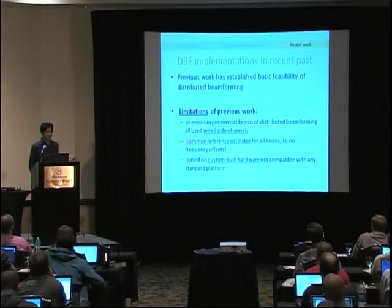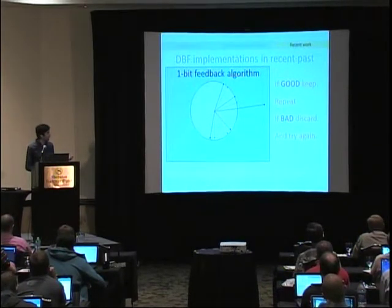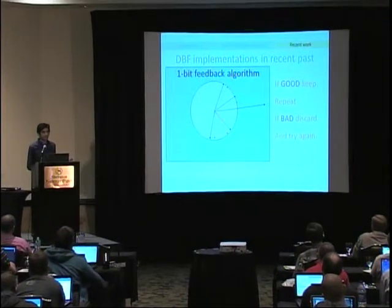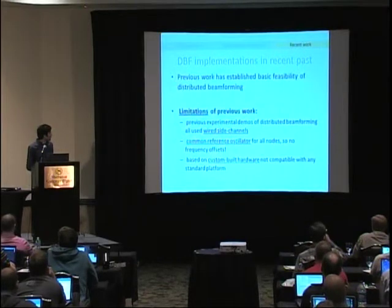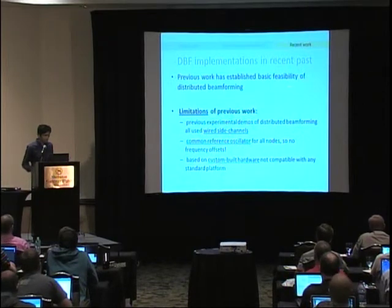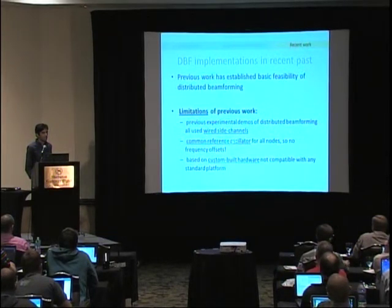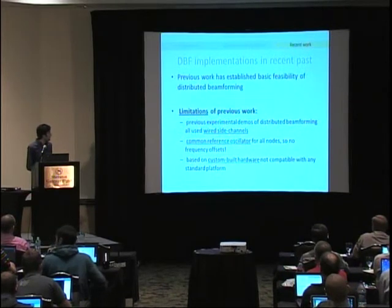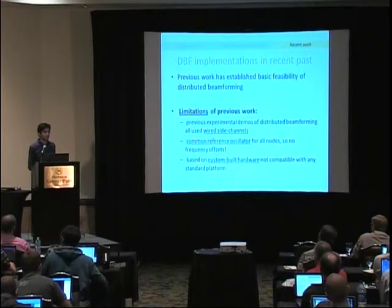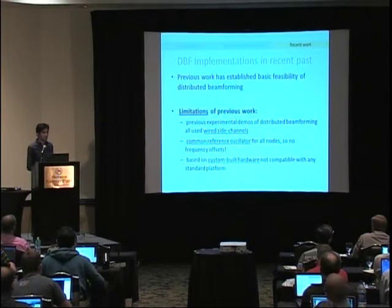Previous implementations of distributed beamforming had limitations. The one-bit feedback algorithm implicitly assumes all cooperating transmitters are already aligned in frequency, with only an unknown phase offset remaining. Previous work distributed the clock to all transmitters by means of a wire — effectively making it like a MIMO system — and they used custom-built hardware that cannot be reused with ease. In our work, we do not assume the transmitters are synchronized in frequency; we perform both frequency and phase synchronization, which is a significant advance over previous work.